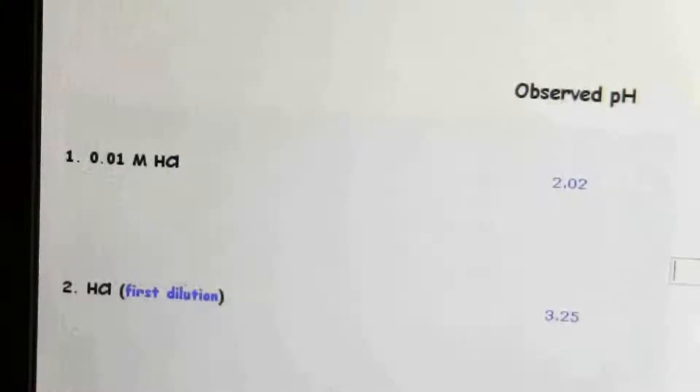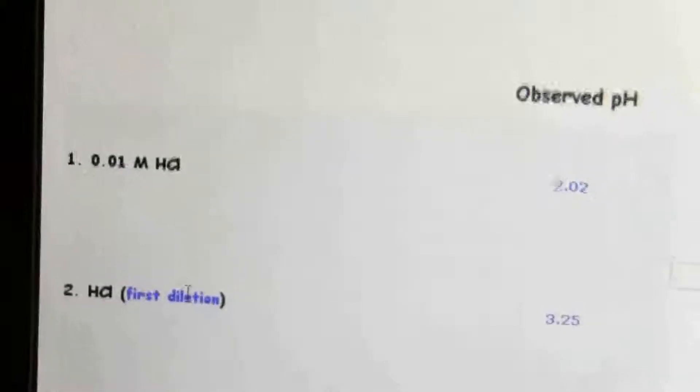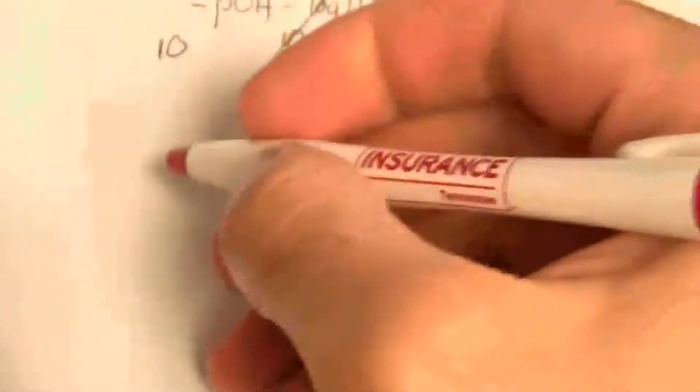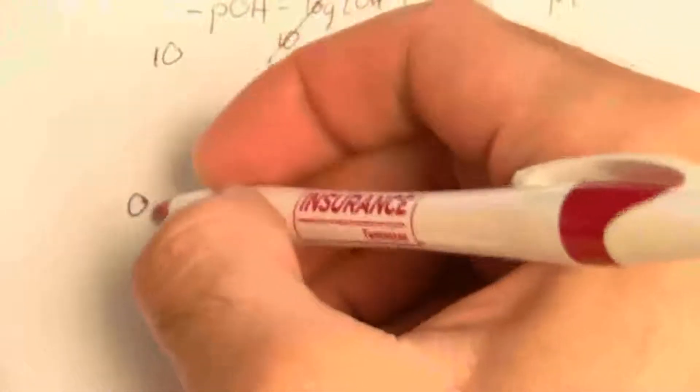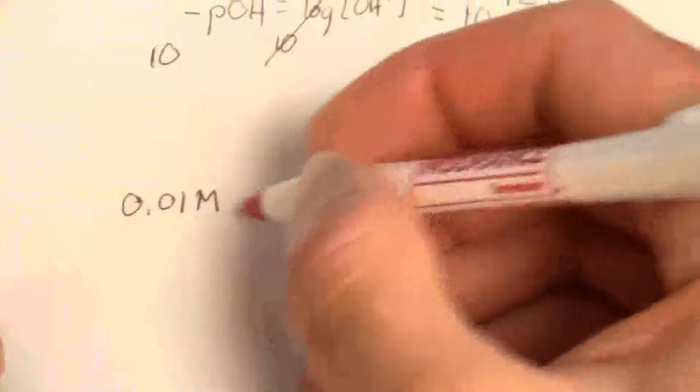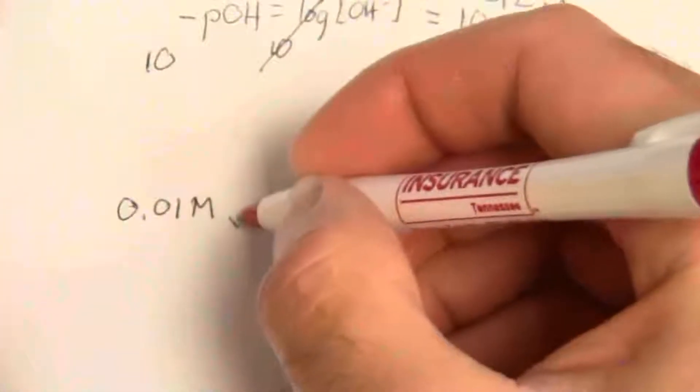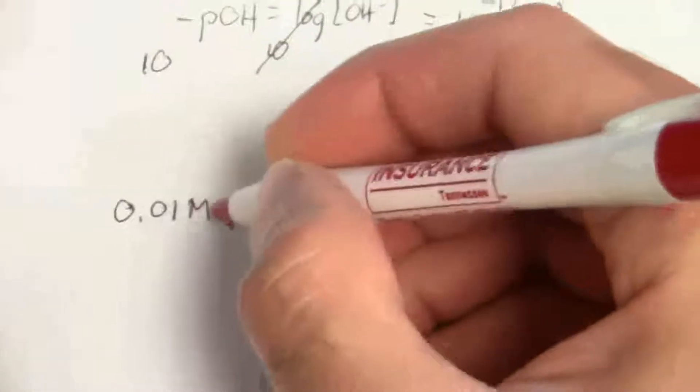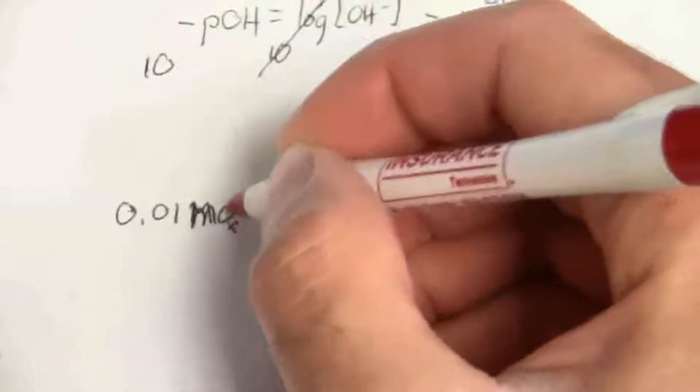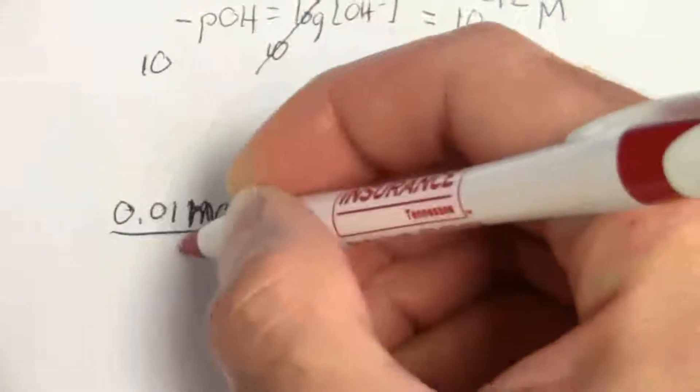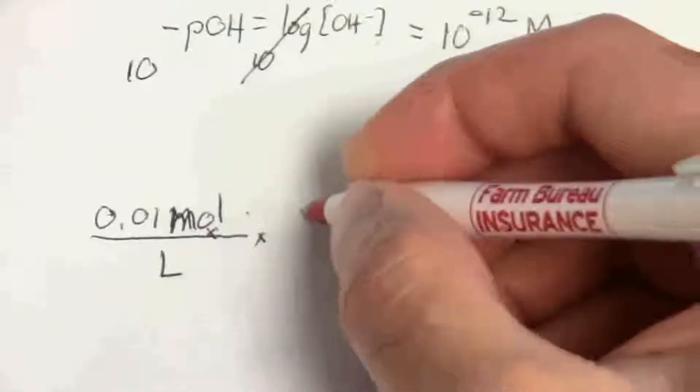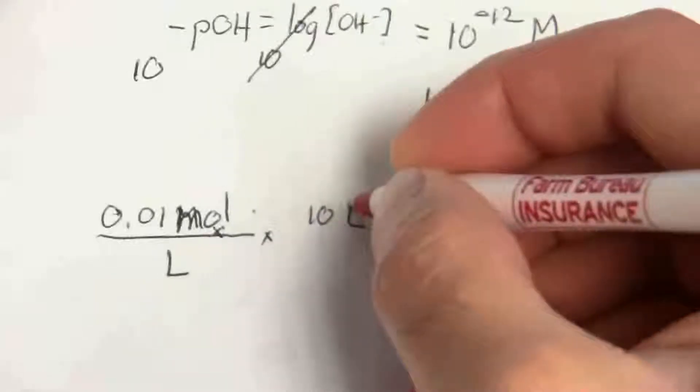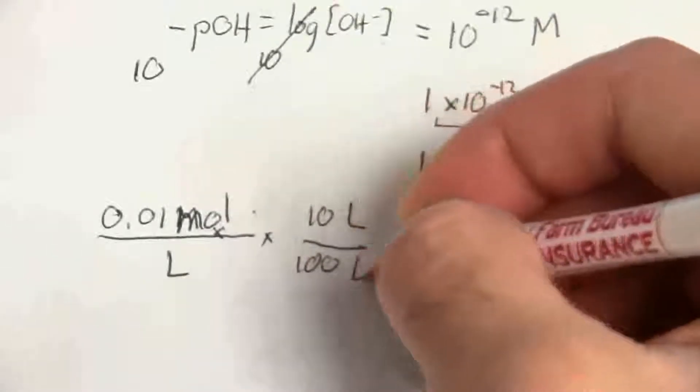So what was my dilution in the first place? Well, it was a 10 to 100 part dilution. So I started out with 0.01 molar, and I took, well, let me just write this as moles per liter.